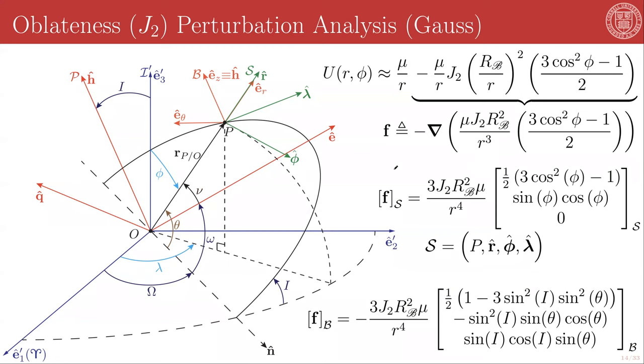In order to apply Gauss's equations, we need a perturbing force term, and we need for it to be expressed in components of a rotating frame B, where the first unit direction corresponds to the orbital radius direction, the third unit direction is the angular momentum direction of the orbit, and the third E theta direction completes the unit vector triad.